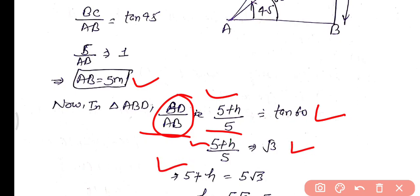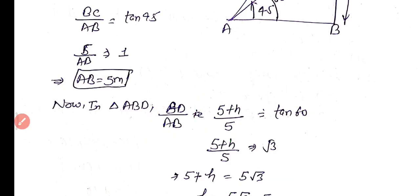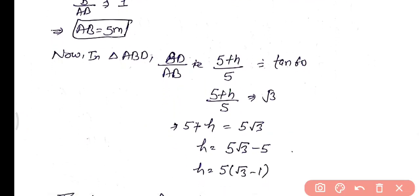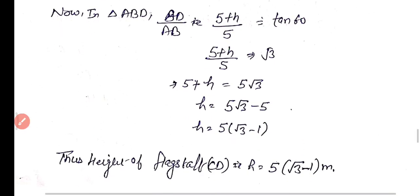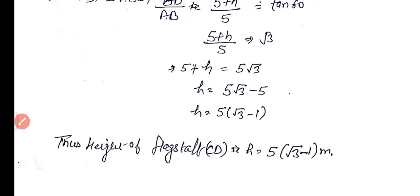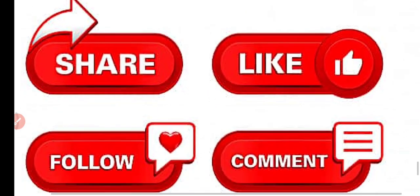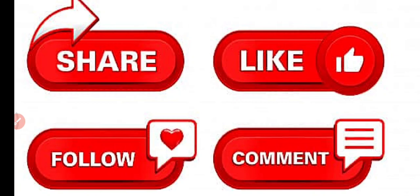In triangle ABD: BD/AB = tan60°, so (5 + h)/5 = √3. After cross-multiplication: 5 + h = 5√3, so h = 5√3 − 5 = 5(√3 − 1) meters. Therefore the height of the flagstaff CD = 5(√3 − 1) meters. This is all about worksheet number 40. If you learned from this video, please subscribe to my channel and share it. Thanks for watching.